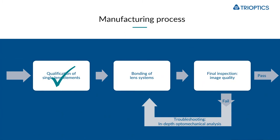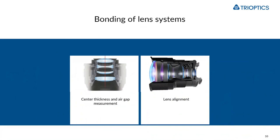Now let's talk about the bonding of lens systems. The typical parameters that have to be controlled during the bonding process include ensuring that all lenses are correctly positioned along the optical axis with correct spacers — for example, correct air spacing between the lenses. We also have solutions for this, but now let's talk about the lens alignment concept.